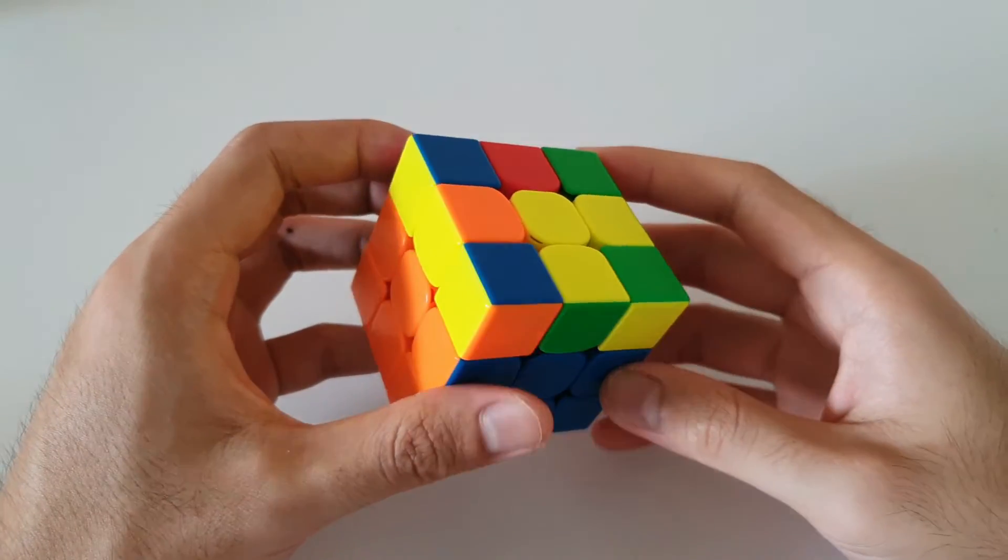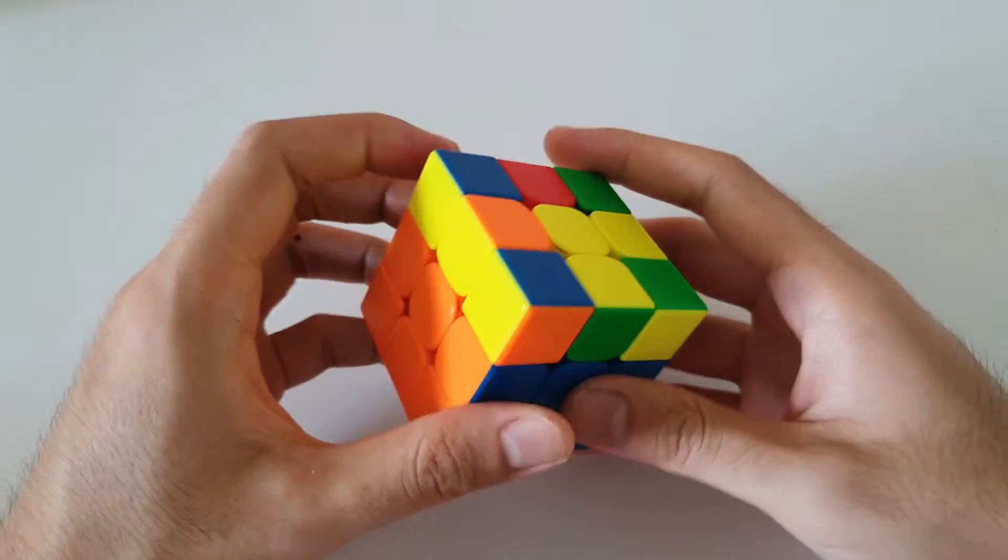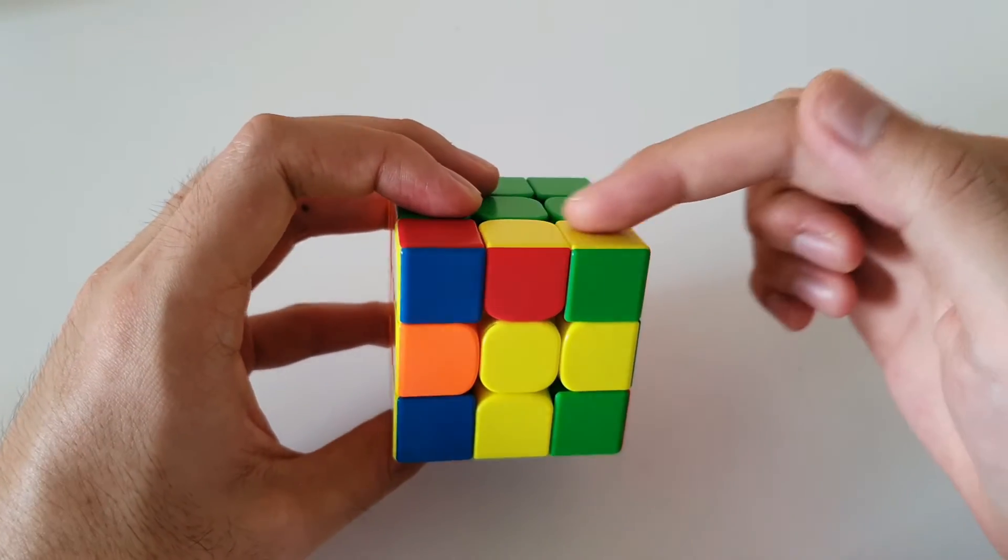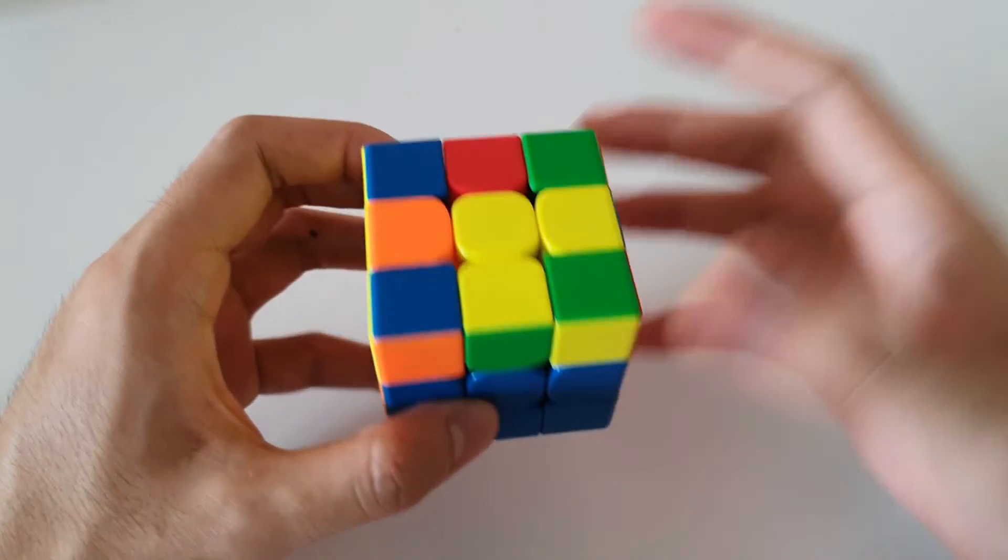And final case we have here, you can kind of think of it as the mirror of the previous one. But in this case, once again, 3x1 bar on the side, the 2x1 bar is now facing the back. So you can kind of think of it as the back version of the algorithm.